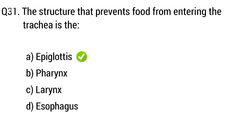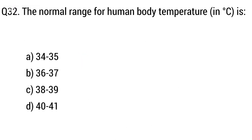Question 32. The normal range for human body temperature in degrees Celsius is? The right answer is option B: 36 to 37.